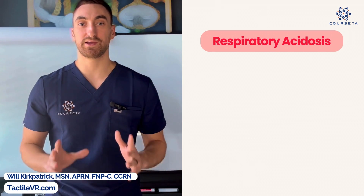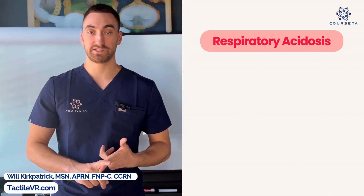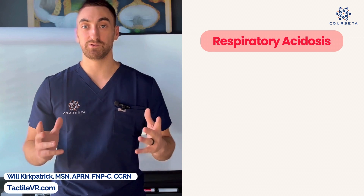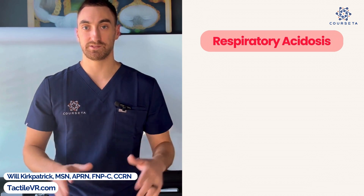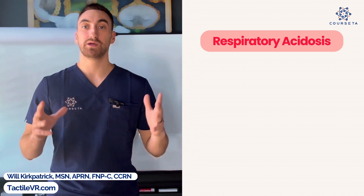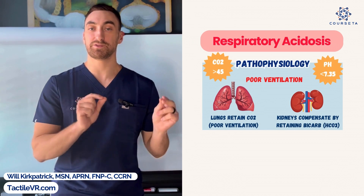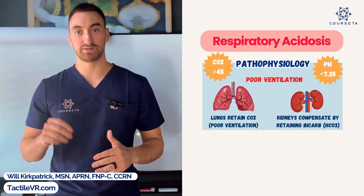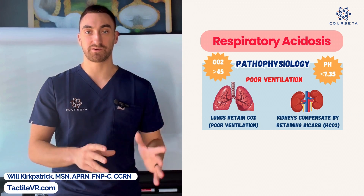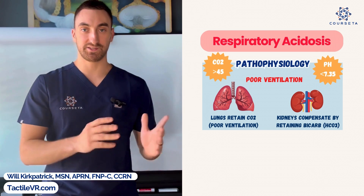Let's go into respiratory acidosis. We're going to go over the pathophysiology, the signs and symptoms, and the management — all concepts you will need to know for your nursing exam. Respiratory acidosis is defined by a pH below 7.35 and a CO2 above 45. A normal CO2 level is 35 to 45. If it's above 45, it is respiratory acidosis.